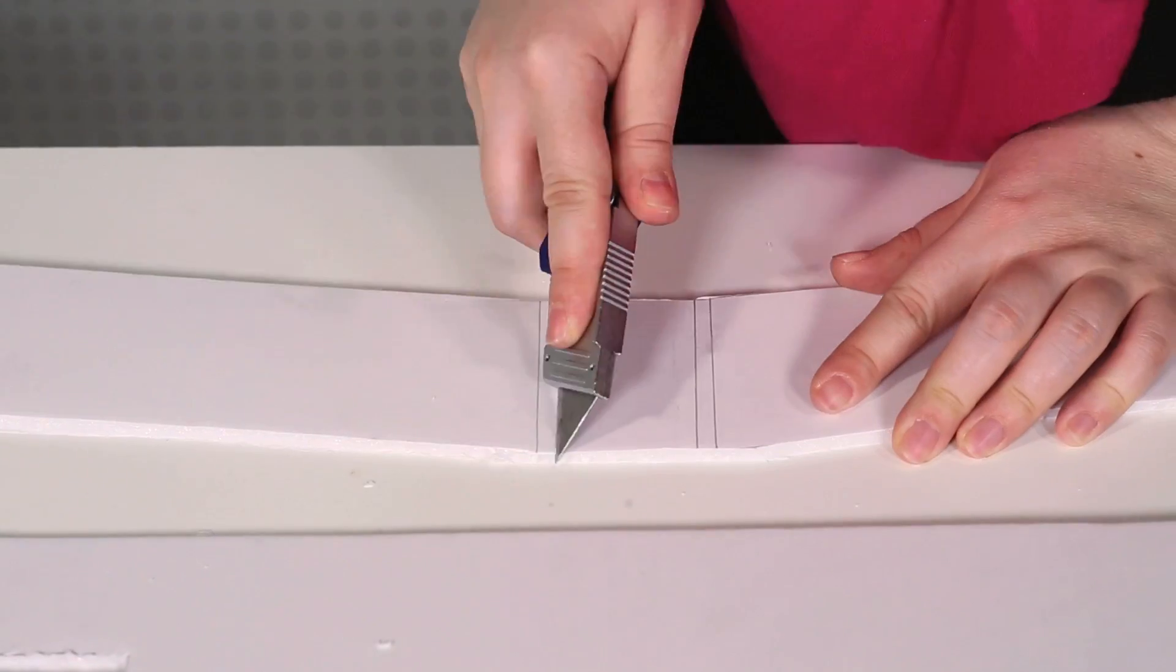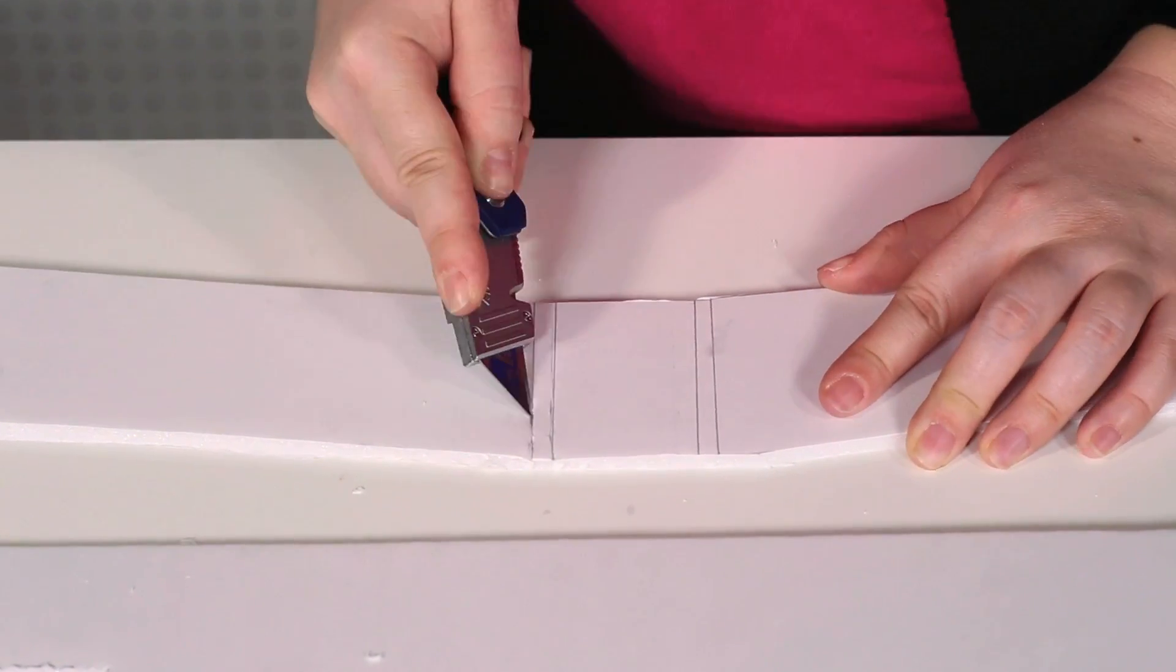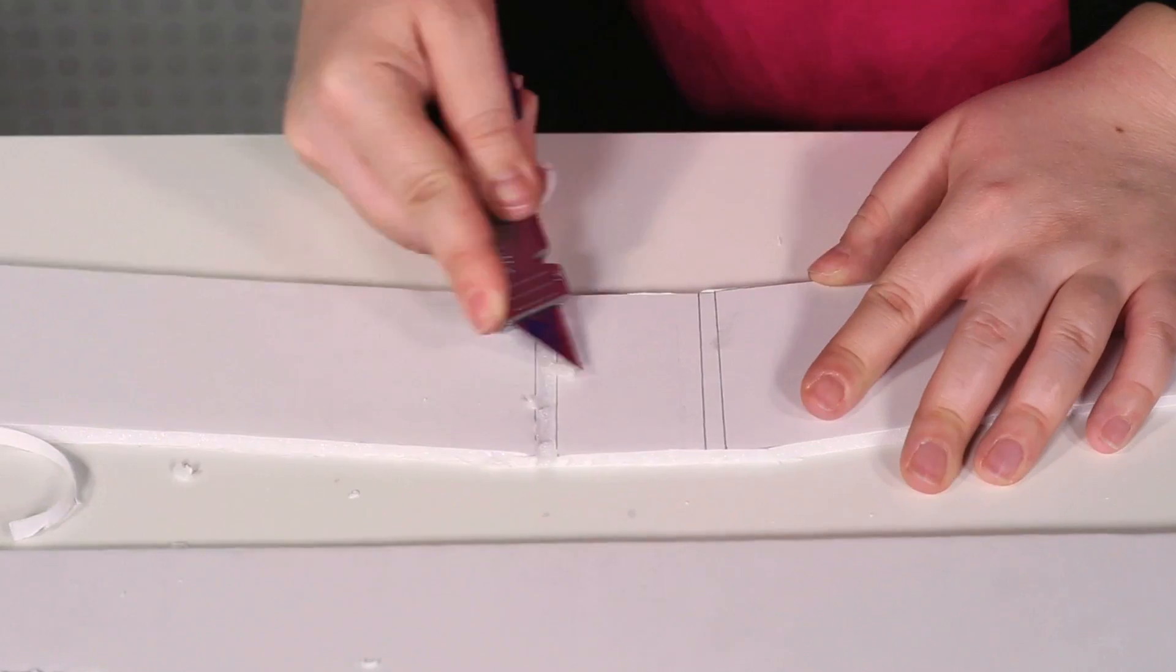For the V-shape, you're going to cut a wedge in each notch, again avoiding cutting through the bottom layer of paper.